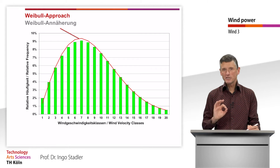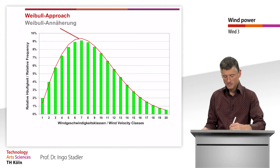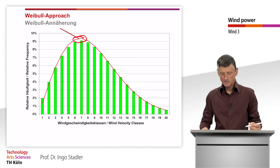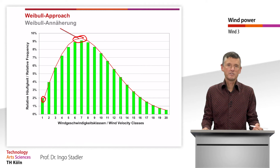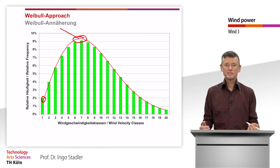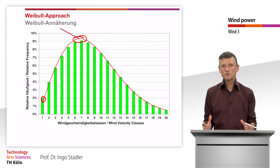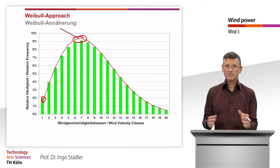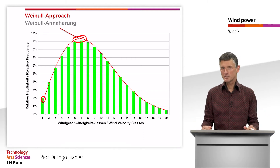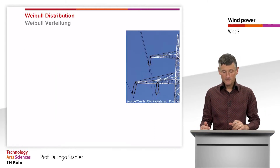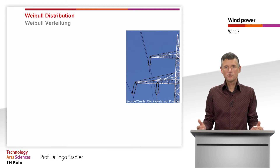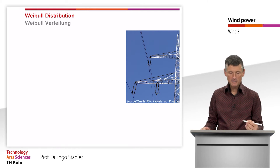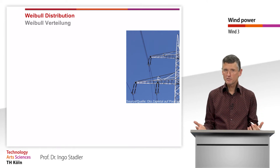It's not completely perfect — we see here for example we are overestimating some bars and underestimating others a bit — but it is very close to reality and much more comfortable to calculate with a statistical distribution than with tens of thousands of measurement values all the time. Therefore we have a look at this Weibull distribution.